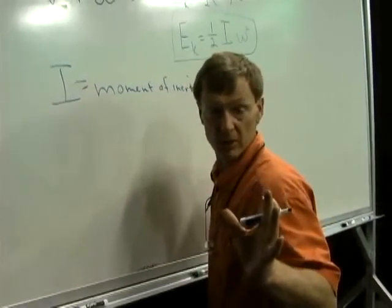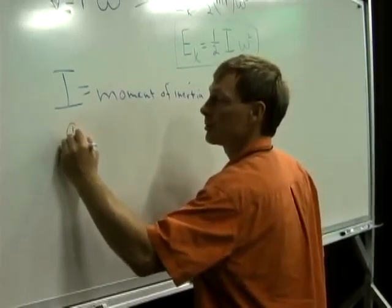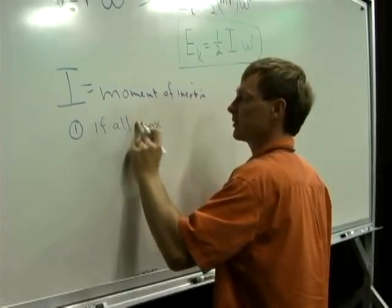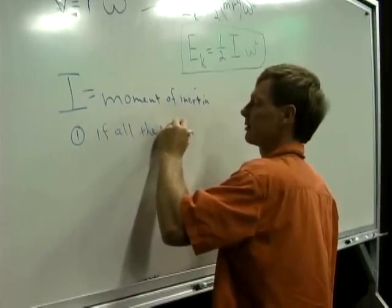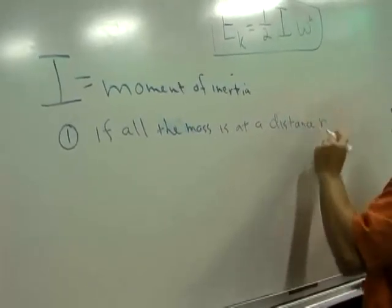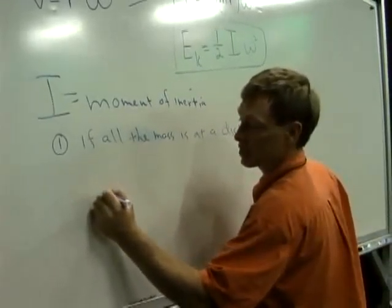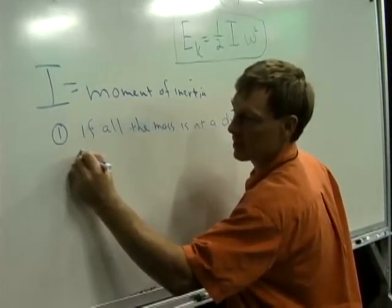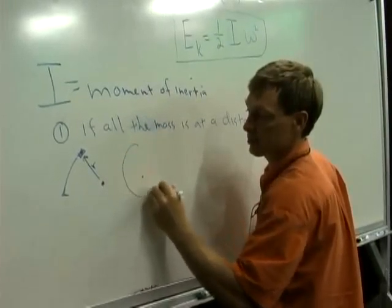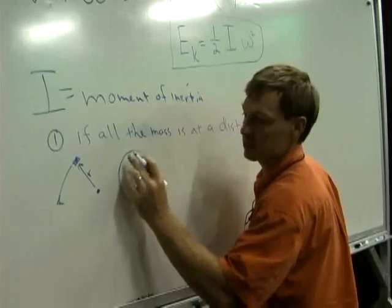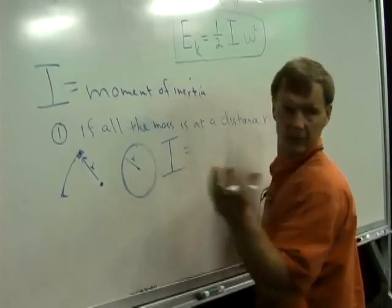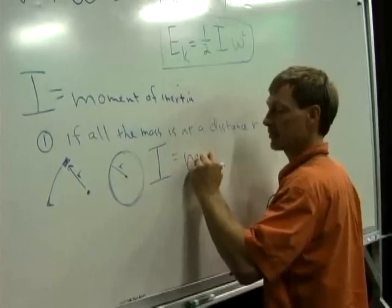So moment of inertia, I'm going to give you three different moments of inertia that we'll test you on. So 1, if all the mass is at a distance r from the center of rotation, and that can be you've got one object right there moving around at a distance r, or I can take that mass and I can spread it out. Just as long as it's all that same distance, it doesn't matter. Then the moment of inertia is just what I described here for the wheel. It's mass times radius squared.